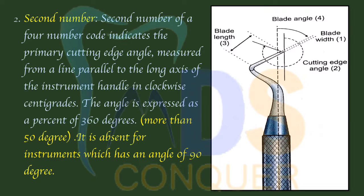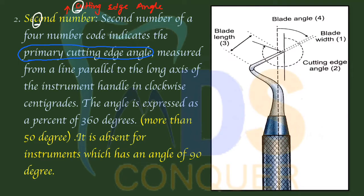The second number indicates the primary cutting edge angle. An easy way to remember: 'second' has a C in it, and 'cutting' has a C in it — so the second number represents the cutting edge angle.